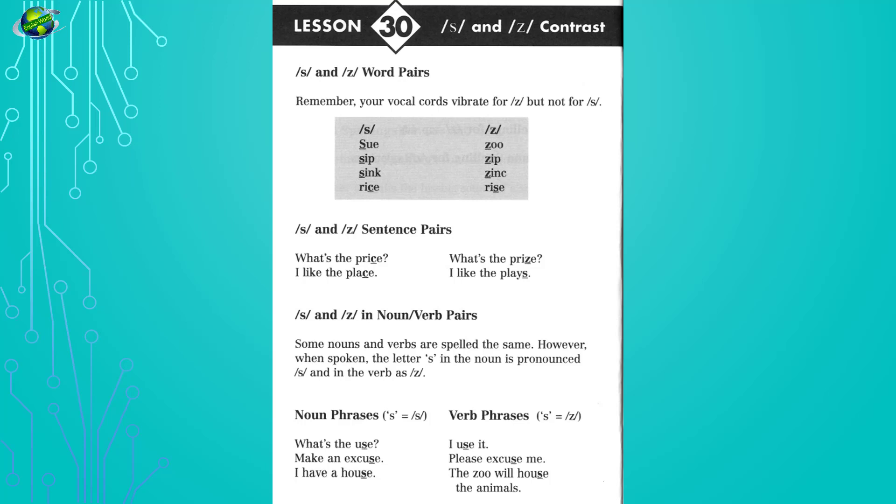What's the price? I like the place. Noun and verb phrases. Listen and repeat. I use it. Make an excuse. Please excuse me. I have a house. The zoo will house the animals.